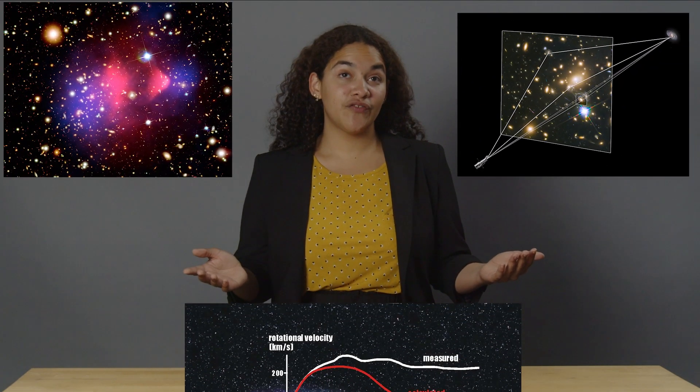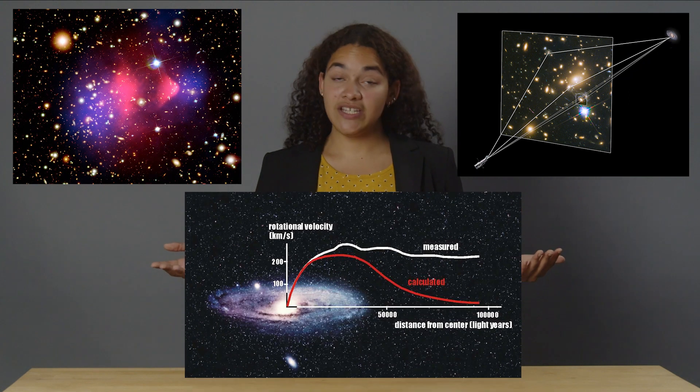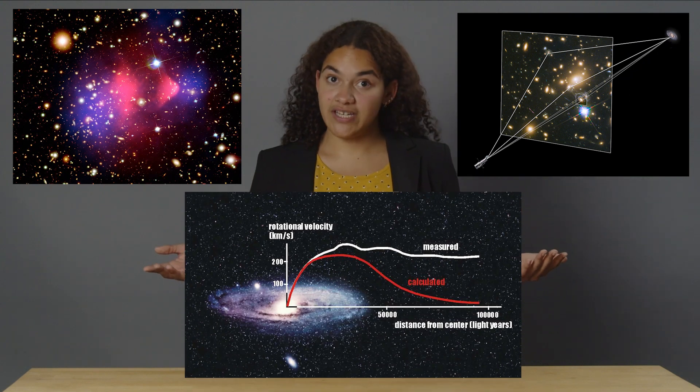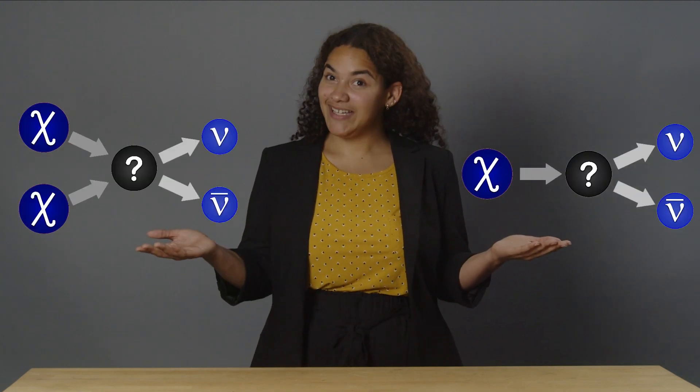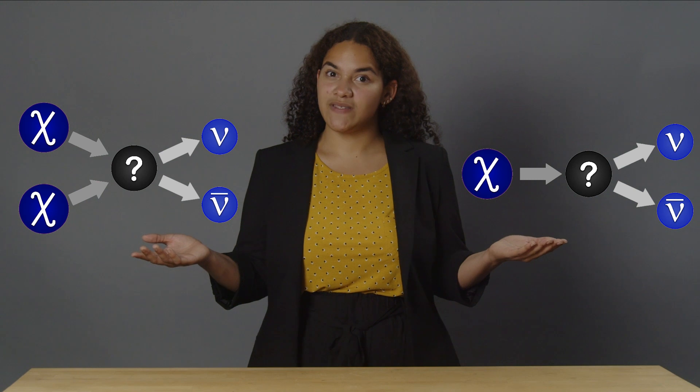We know dark matter exists from numerous astrophysical observations and their gravitational effects, and through some mystery mediator, we can expect a dark matter particle to decay or annihilate into standard model constituents. But for now, we want to focus only on neutrinos.